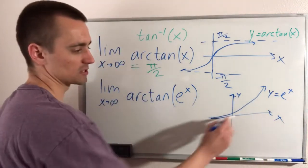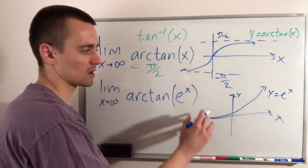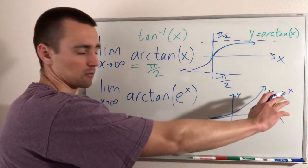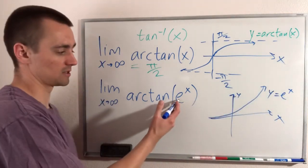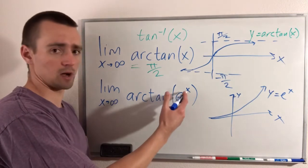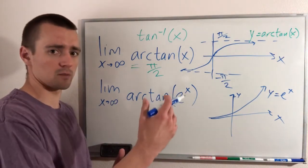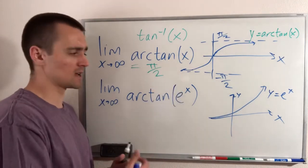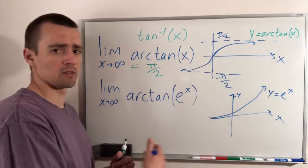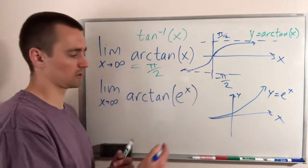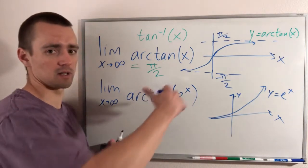As x goes to infinity and gets bigger and bigger, e to the x is just going to keep getting bigger and bigger because we just have this constant e being raised up to a higher and higher power. If you have some positive constant being raised up to a bigger and bigger power, as that power gets bigger, the exponent, that whole exponential function is going to keep getting bigger as well.